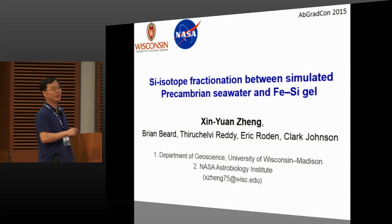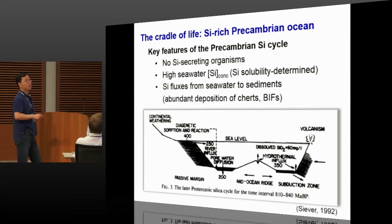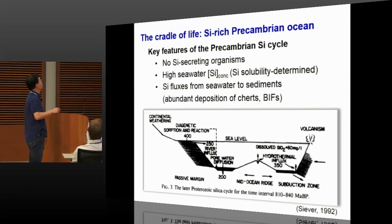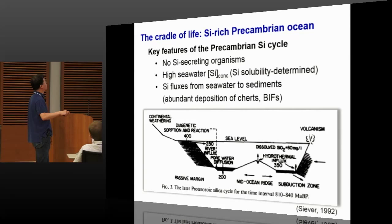Speaking of silicon-iron co-precipitate, today I'm going to show you some experiment results on silicon isotope fractionation between simulated Precambrian seawater and iron silica gel. We know the Precambrian Ocean was dramatically different from the modern ocean. In particular, there was no silica-secreting organism at the time, so the silica concentration in the Precambrian seawater was over an order of magnitude higher than modern seawater. That leads to a silica flux from the seawater into sediments, which is why we see unusually abundant deposition of silica-rich rocks during the Precambrian, like chert and banded iron formation.